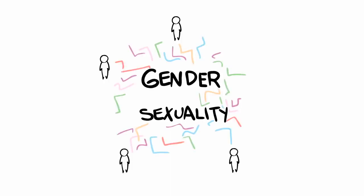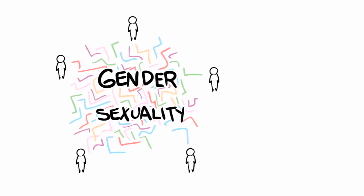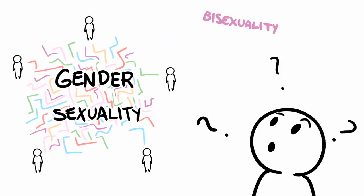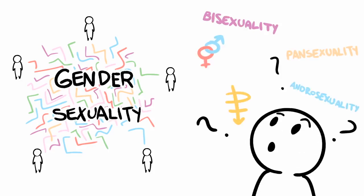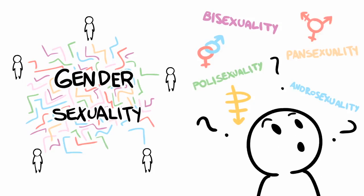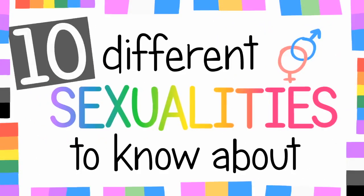Gender and sexuality are two concepts that are incredibly individualized, and so it shouldn't be surprising that they are so complex. It can be hard to navigate the world of sexuality due to the different terms and labels. This video aims to help you navigate this world by arming you with some definitions and examples of 10 different sexualities, some of which you might not even know about.